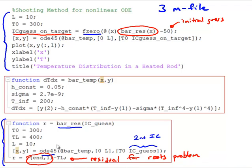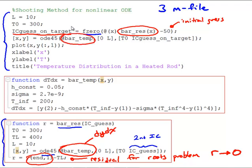fzero is now using that function bar_res to find the value of x such that the residual r goes to zero. Bar_temp, the other function involved, defines our dy/dx. It really makes sense to use an external M-file for bar_temp, because we're calling it once from our main file — the same file that we're calling fzero from — and then calling it a second time from the function file that defines bar_res.